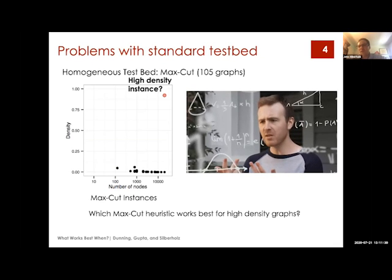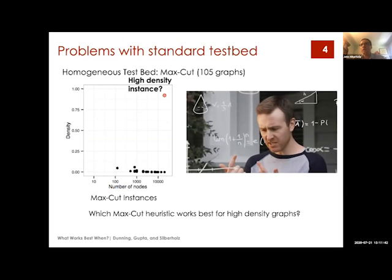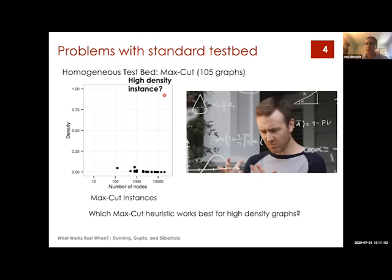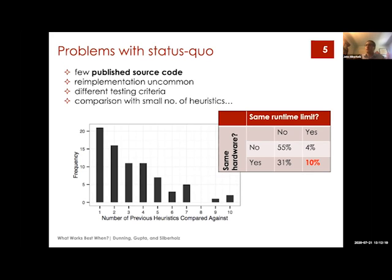At first blush this doesn't seem like such a big problem — you say, no big deal, I'll take these heuristics from the literature, test them on instances that look like my high-density instances, see which one works best, and we're good to go. But this brings us to another really big problem: our literature actually has very, very few heuristics published with their source code. We found that across a wide range of heuristics, only 4% published their source code. So it's not trivial to go back, take all these previous heuristics and test them on a new instance. We'd have to read through the papers, re-implement the heuristics, and then run them. This is a reproducibility problem — the literature is not reproducible.